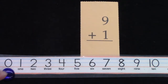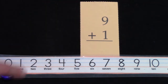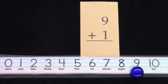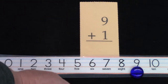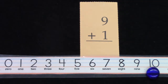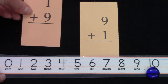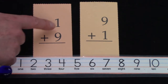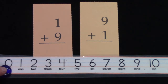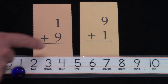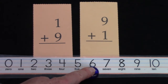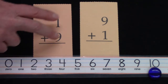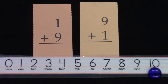Let's try it: 9 plus 1. We're going to move our gem 9 spaces: 1, 2, 3, 4, 5, 6, 7, 8, 9. And we're going to add 1 to it. 9 plus 1 more is 10. What if we tried 1 plus 9? Will it also be 10? Let's add: 1, 2, 3, 4, 5, 6, 7, 8, 9. It is 10. It does not matter which order our numbers are in when we're adding.